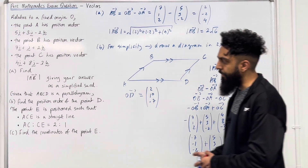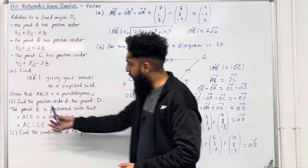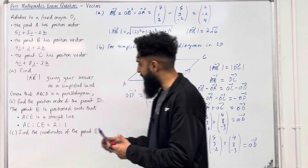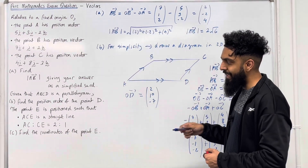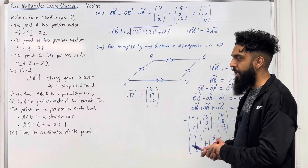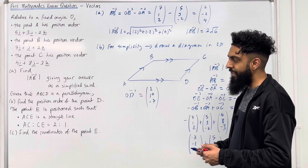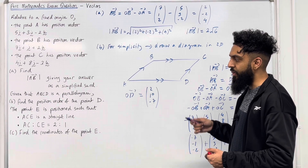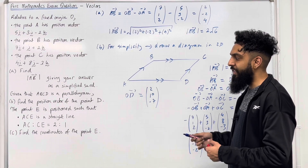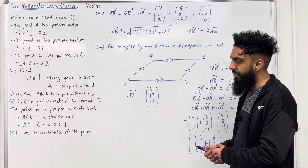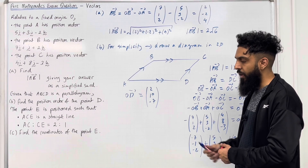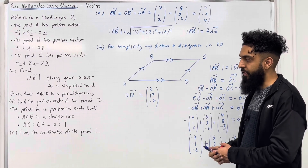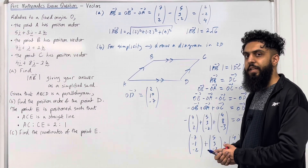Moving on to part C. The point E is positioned such that: first, ACE is a straight line, and second, the ratio AC to CE equals 2 to 1. Part C asks us to find the coordinates of the point E. Please pause the video, have a go at part C, and once you've got your complete solution, play the video.